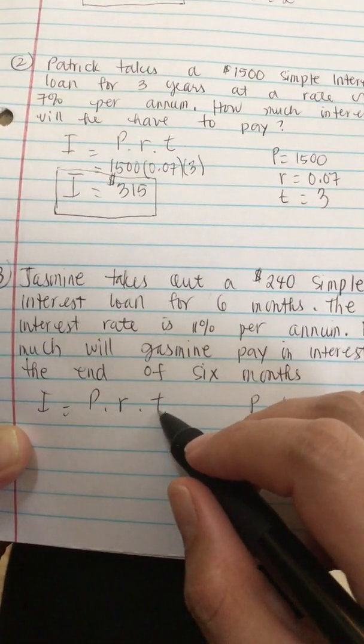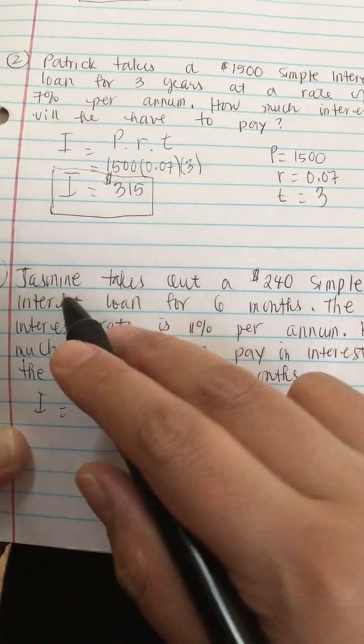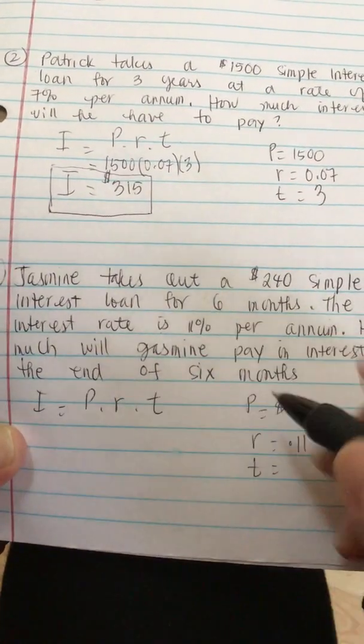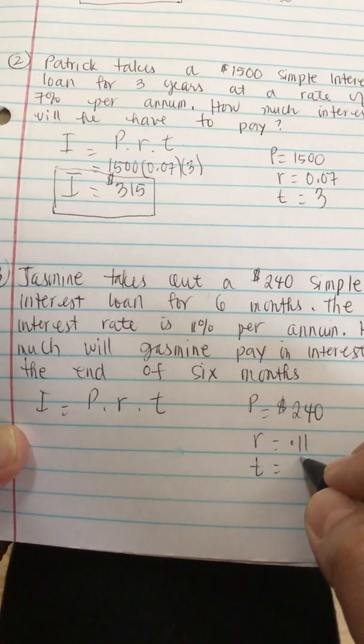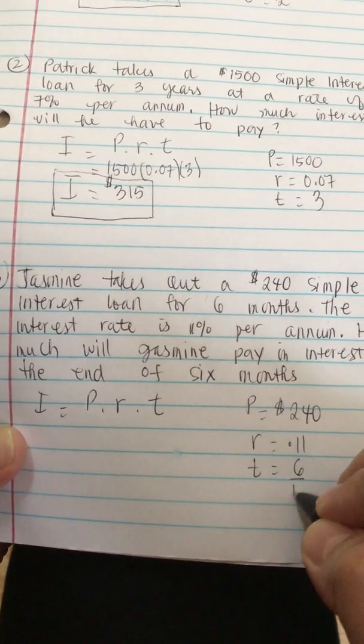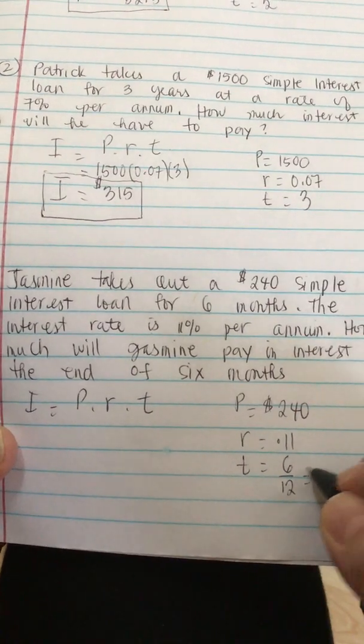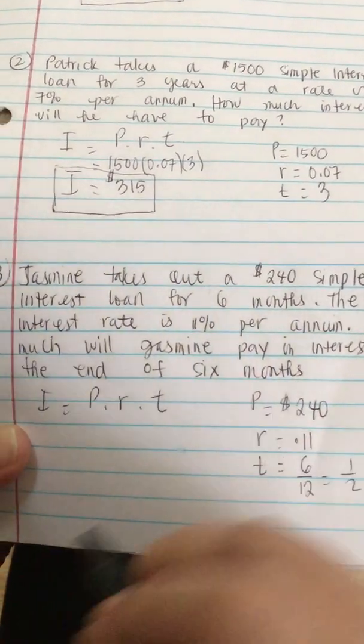Now in the formula T is always in years. Jasmine only borrowed it for 6 months so we have to divide that by 12. So T is equal to 6 months over 12 or this is equal to 1 half.